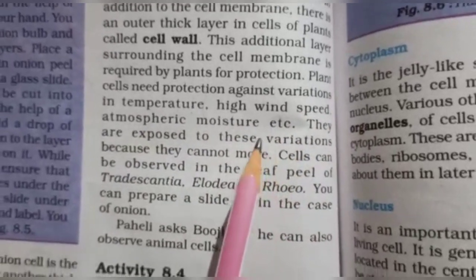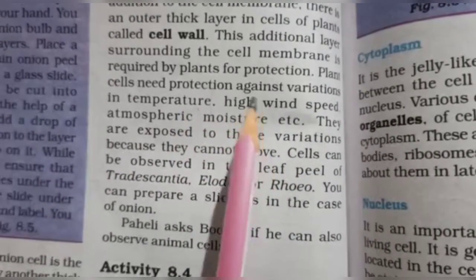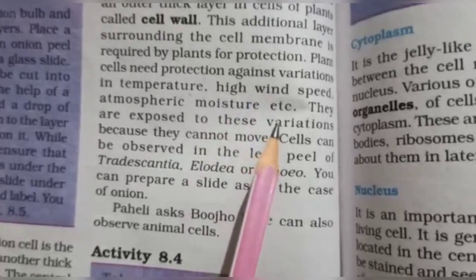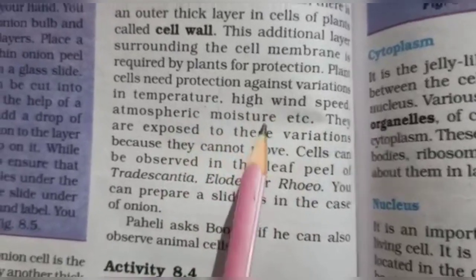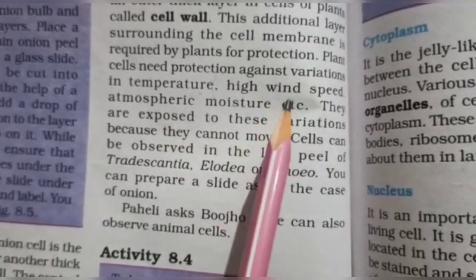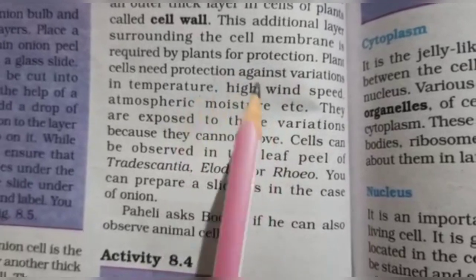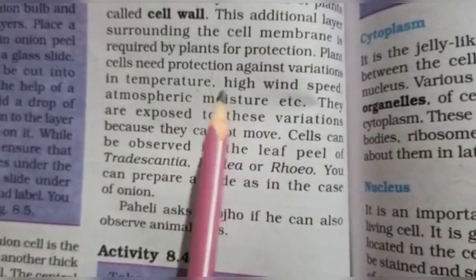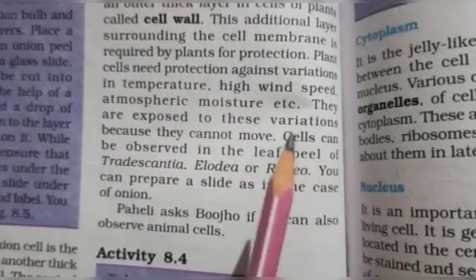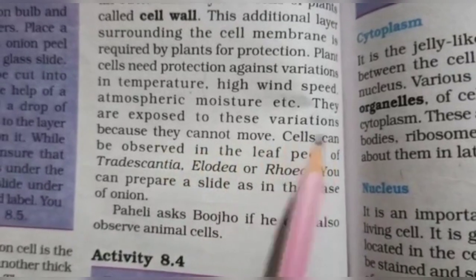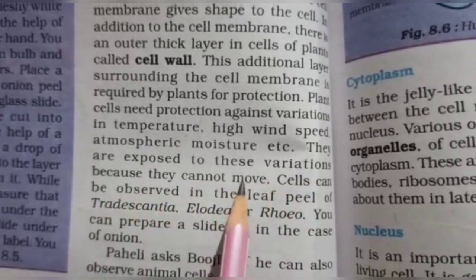So what about animal cells? Animals have no need for such protection against temperature, high wind speed, or atmospheric moisture, because animals can move. But plants are exposed to these variations because they cannot move. That is why plants have a cell wall but animals do not.